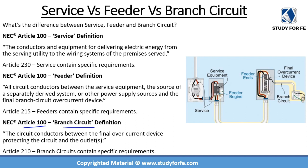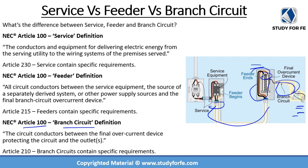The best way to identify a branch circuit is to start from the end load — a receptacle, a lighting fixture, a dishwasher, or an appliance. You start from the end load and make your way up to the distribution panel, which contains overcurrent protective devices for many such loads. The conductor between that panel and your end load is your branch circuit. The conductor on the line side of that panel — whether it's a lighting panel or a switchboard — all the way back to the service equipment classifies as a feeder. And from the line side of the service equipment upstream, that is all service.